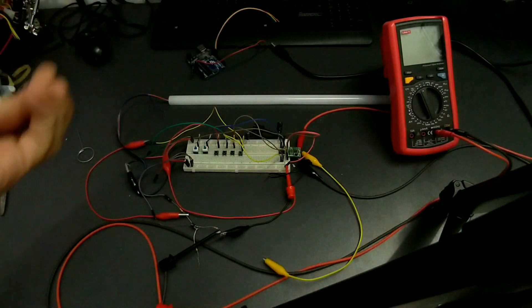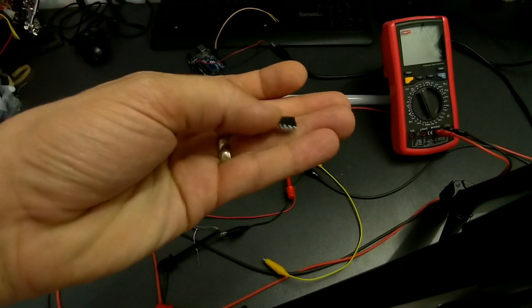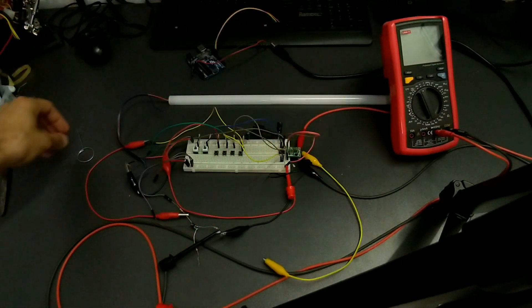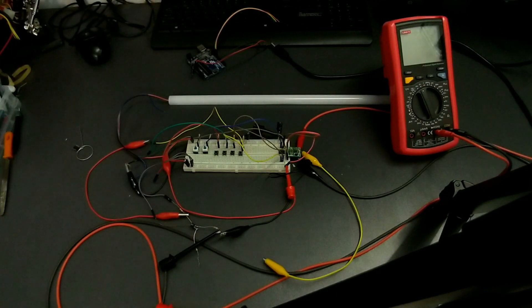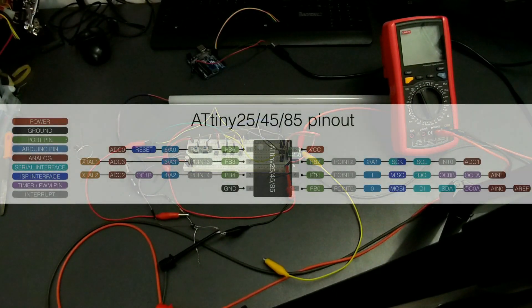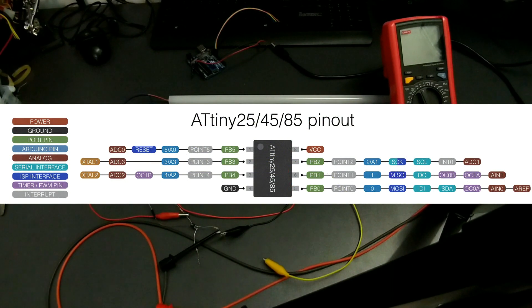First, what is an ATtiny? Well, it's a small 8-pin high performance low power AVR RISC-based controller with 8 kilobytes of program storage, 512 bytes of memory, and 512 bytes of EEPROM data.